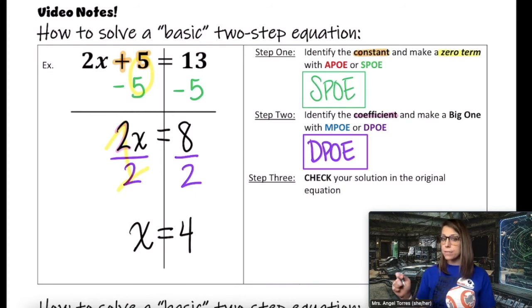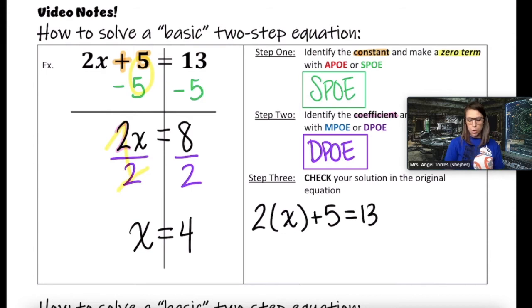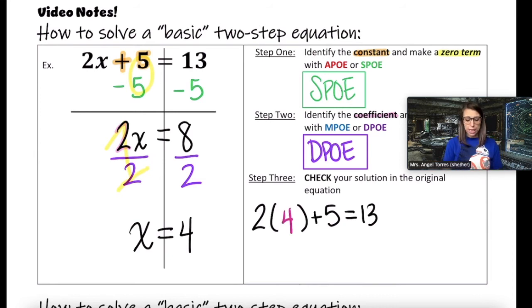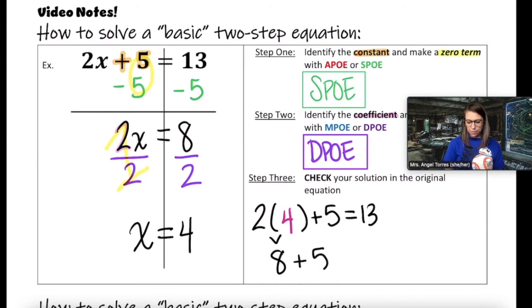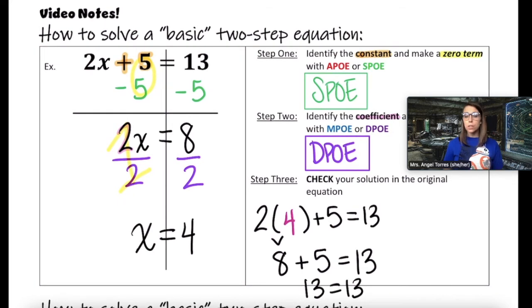Of course, we always have to go to step three: check. To check my work, I'm taking my original equation, 2 times x plus 5 equals 13, but replacing x with my solution, 4. I have to figure out if this equation is true, because if it's not true, we made a mistake. So 2 times 4 is 8, plus 5 equals 13. And 8 plus 5 is 13, meaning 13 equals 13 — the solution to this equation is x equals 4.